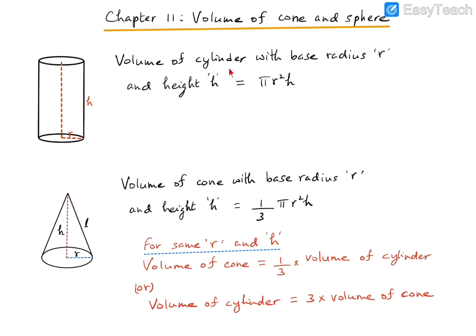Now we come to the formula for the volume of a cone, which has a base radius r and height h. The volume of the cone is given by the formula (1/3)πr²h.